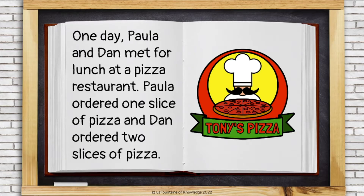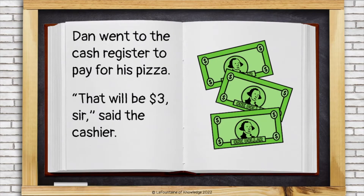Paula ordered one slice of pizza and Dan ordered two slices of pizza. Dan went to the cash register to pay for his pizza. 'That will be $3, sir,' said the cashier.